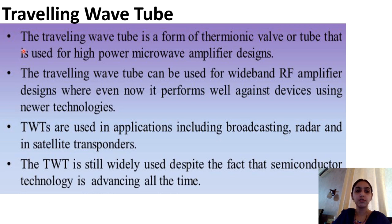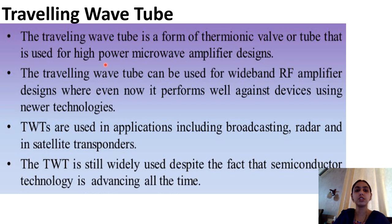In this section we study another O-type tube like the klystron — the traveling wave tube. A traveling wave tube is a form of thermionic valve or tube used for high power microwave amplifier designs. It is capable of producing and amplifying microwaves of higher power compared to the klystron, and it is an O-type tube as compared to the M-type magnetron device.